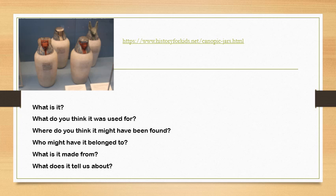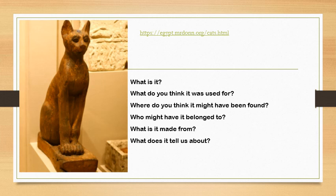Now I've put on here another artefact that I want you to research — these are canopic jars. I want you to think about: what are these jars? What do you think they were used for? Where do you think they were found? Who might they have belonged to? What were they made from? And what does it tell us about? There is a link here — I will put these on Teams as well for you to follow and it will give you the information. But please predict your answers first and use what you already know. There's also a second artefact here, with exactly the same questions — make those predictions first, and then there's a link for you to go and research about the artefact.